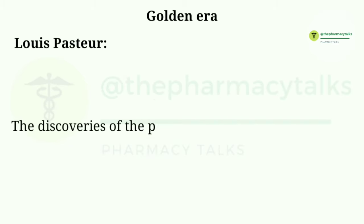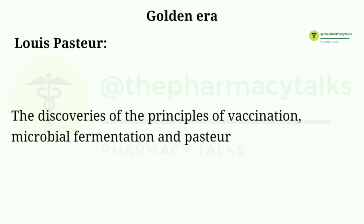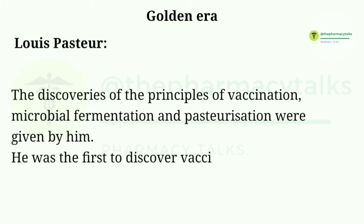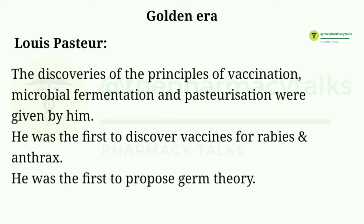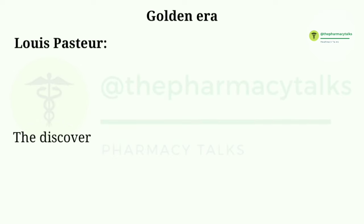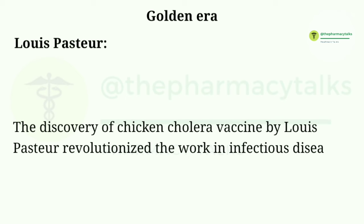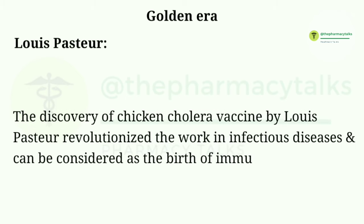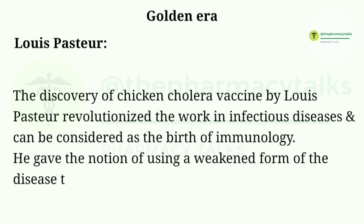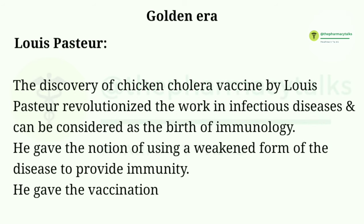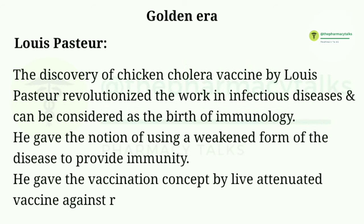The discoveries of the principles of vaccination, microbial fermentation, and pasteurization were given by him. He was the first to discover vaccines for rabies and anthrax. He was the first to propose germ theory. The discovery of the chicken cholera vaccine by Louis Pasteur revolutionized the work in infectious diseases and can be considered as the birth of immunology. He gave the notion of using a weakened form of the disease to provide immunity, giving the vaccination concept by live attenuated vaccine against rabies.